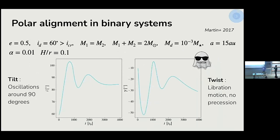Here we are showing numerical simulations performed with the SPH code Phantom. We use the same parameters as Martin 2017: we simulated an eccentric binary with eccentricity of 0.5, and the circumbinary disk with an initial inclination of 60 degrees, which is above the critical value for polar alignment. The mass ratio of the binary system is equal to one, and the semi-major axis of the stars is 15 astronomical units.